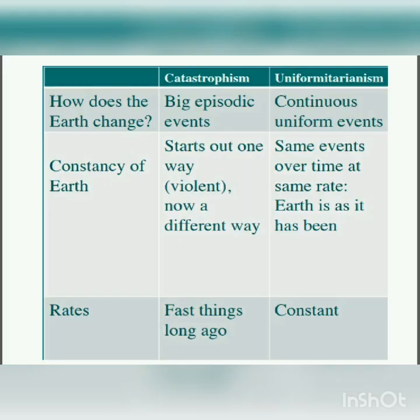Here is a comparison between these two major concepts. In catastrophism, big, fast, violent events take place. Whereas in uniformitarianism, continuous, uniform events of the same rate take place.